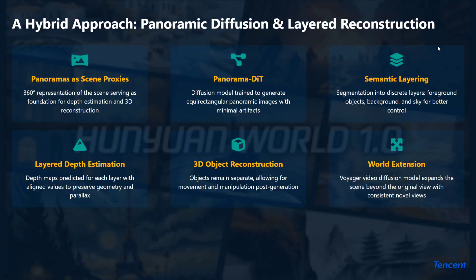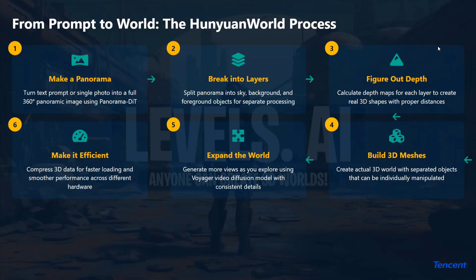HunyuanWorld 1.0 has a somewhat complex architecture, but here's a summary. It generates panoramas as scene proxies — a 360 representation serving as the foundation for depth estimation and 3D construction. Panorama DiT, a diffusion transformer, is an upgraded version used here. Semantic layering segments the scene into discrete layers — foreground objects, background, and sky — for better control. Layer depth estimation predicts depth maps for each layer, 3D objects are separated from the environment, and world extension uses a new model called Voyager video diffusion internally.